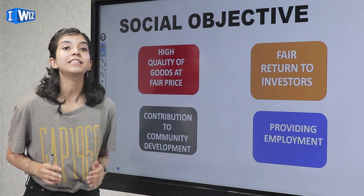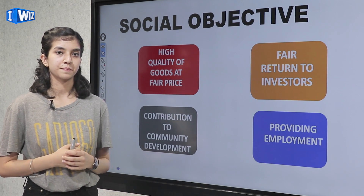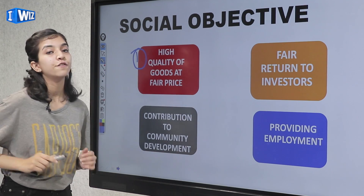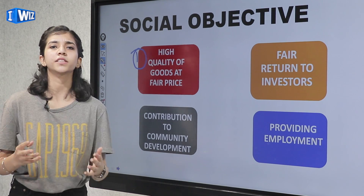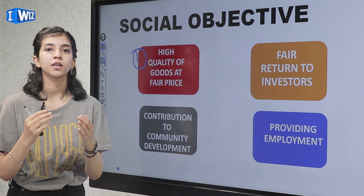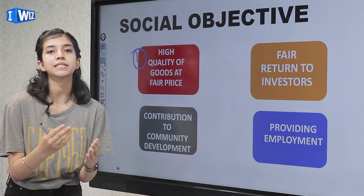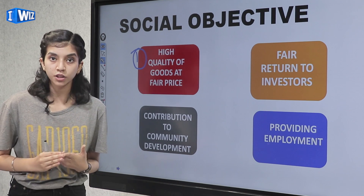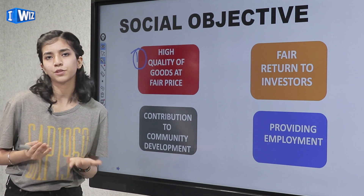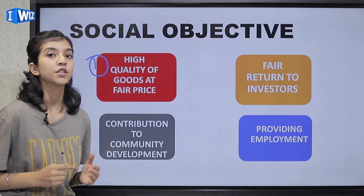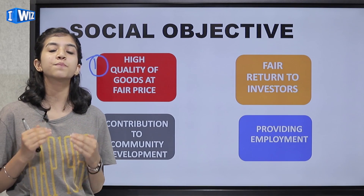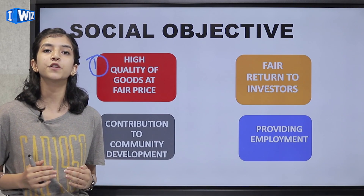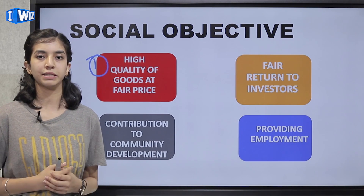Now we come towards the types of social objectives. The first one is high quality goods at fair price. What does a customer want? Good quality products — products which are worth the price you pay, and reasonable pricing. So it is a social responsibility of a seller or a businessman to give customers fair quality products at a reasonable price.